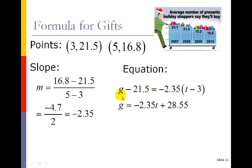I'm using the letter g just for the gift. You could keep using a y if you'd like. And I'm using the letter t for time instead of the letter x. And then I do that multiplying, that negative 2.35 through, and then I added 21.5 to both sides. And that's where you're seeing this 28.55 from. And so that's another example for finding equations of lines.